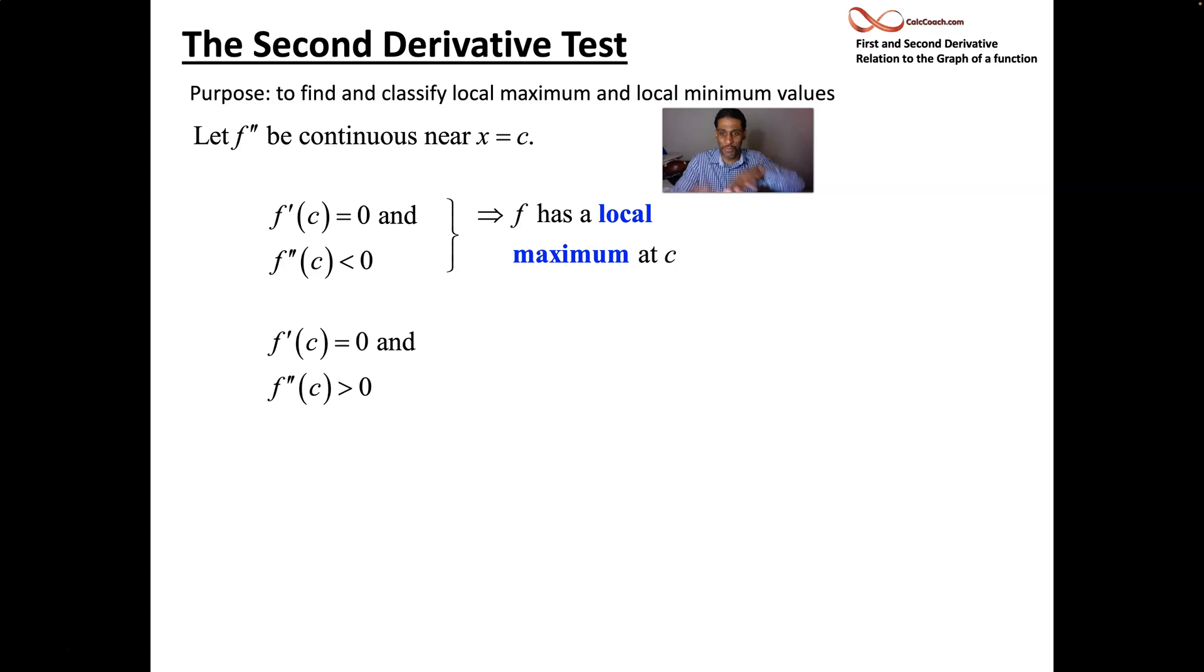Here's where your second derivative is positive, so therefore you're concave up like a cup. A zero tangent line would then be a local minimum. All right. So it's about taking the second derivative and plugging the critical point into the second derivative.